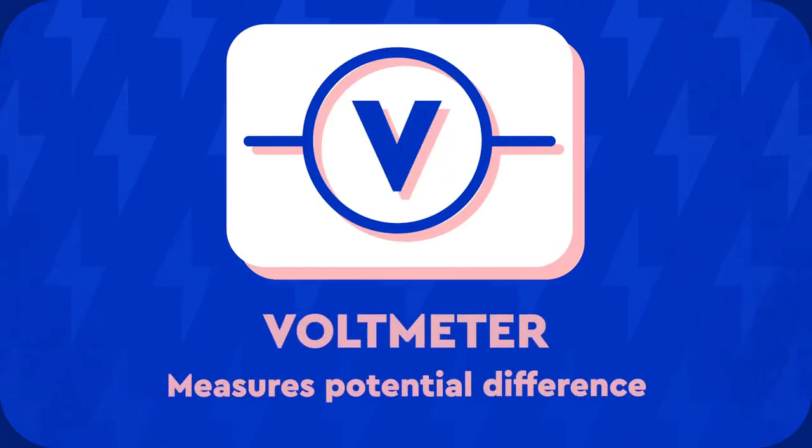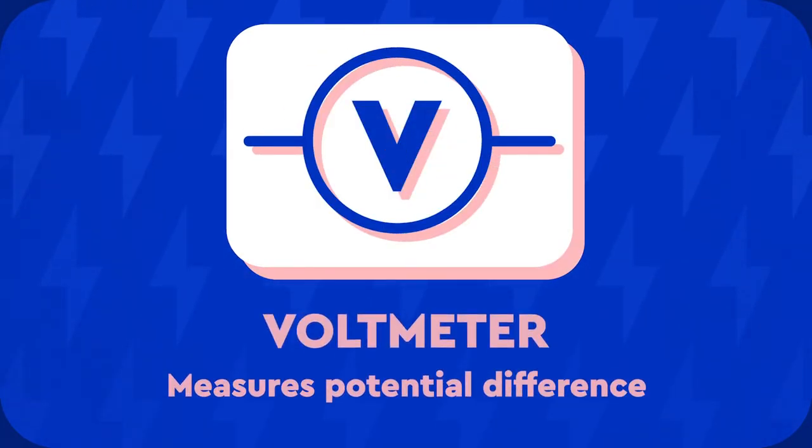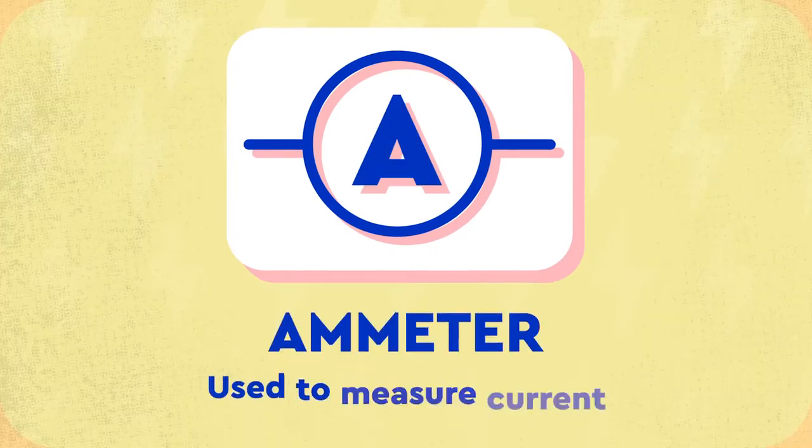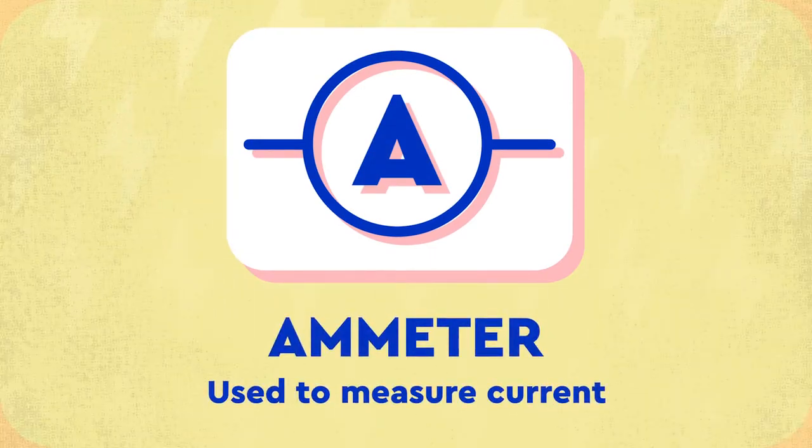A voltmeter is used to measure the potential difference of a component. An ammeter is used to measure the current.